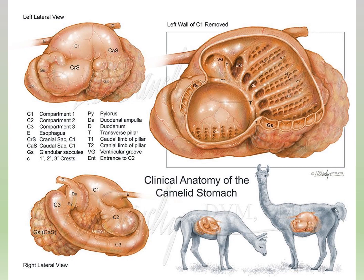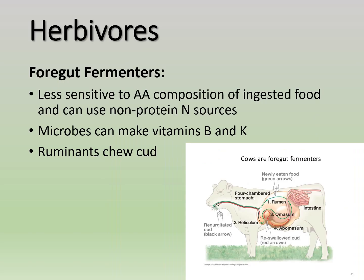This diagram shows a camelid stomach with its compartments and sacs coming off them — lots of chambers for fermentation, but without a rumen, so they're not considered ruminants. You don't need to know all these chambers; it's just a good example.